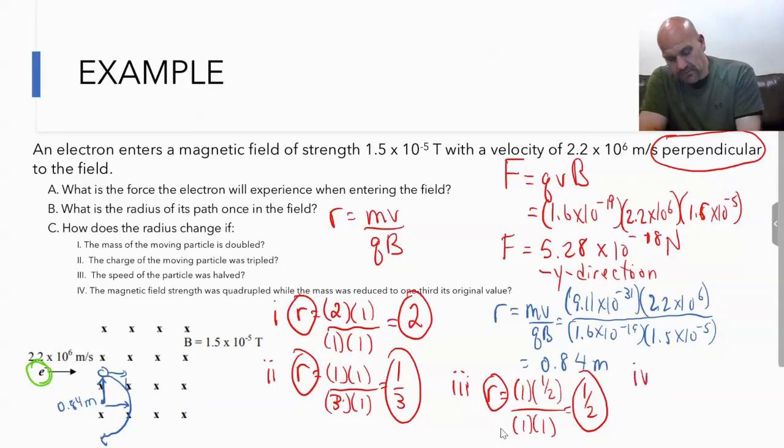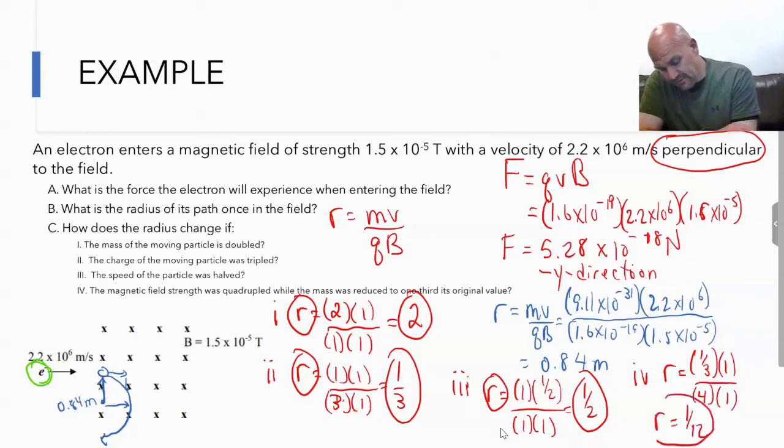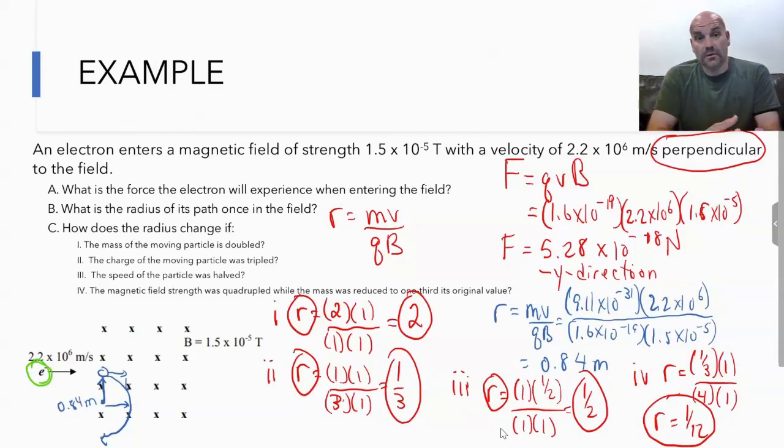Now a little bit more complicated one where we would quadruple the magnetic field but also the mass is reduced by one-third. We would do one-third mass, speed the same, charge is one. If we do a little bit of algebra, you find that the radius would be one-twelfth the original.